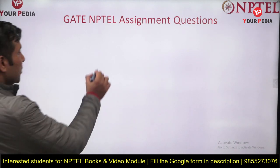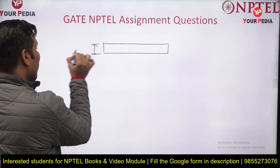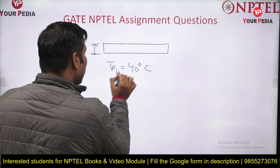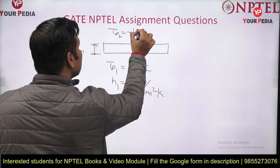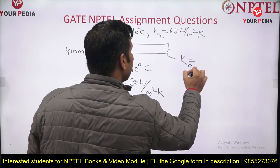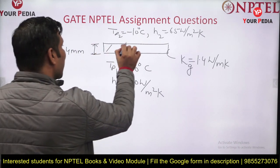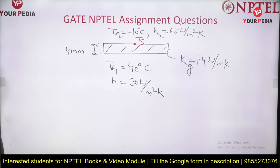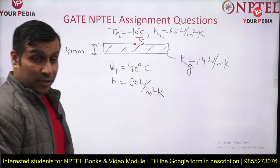Let me frame this question for you. This is the rear window of the automobile — thickness is 4 mm. The inside temperature T∞1 is 40°C and inside convection coefficient h1 is 30 W/m²K. The outside temperature T∞2 is -10°C and outside convection coefficient is 65 W/m²K. The conductivity of the glass is 1.4 W/mK. He is asking for Ts, the outside surface temperature.